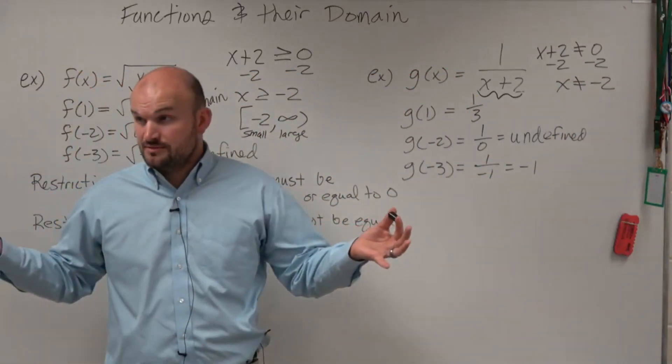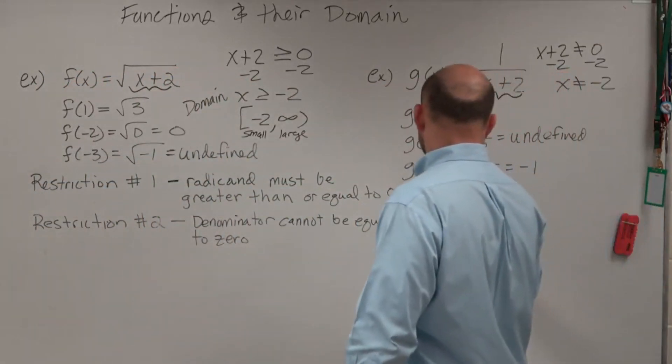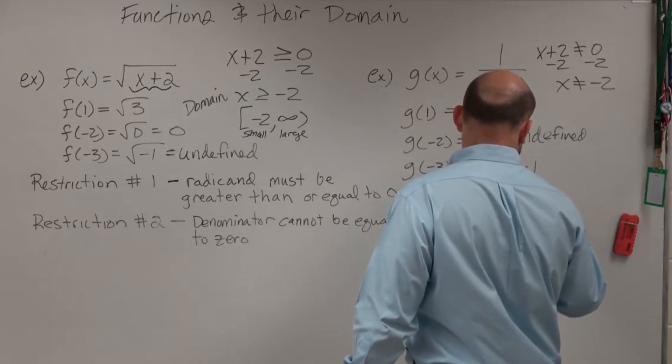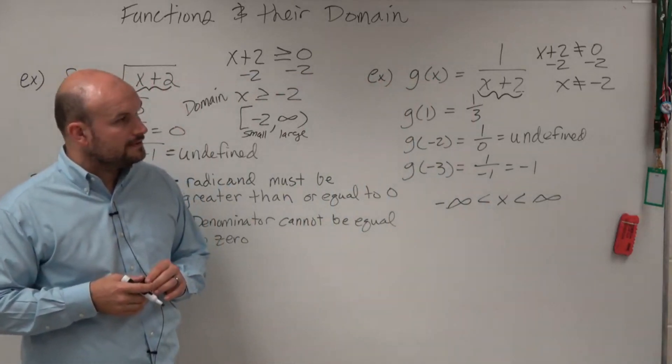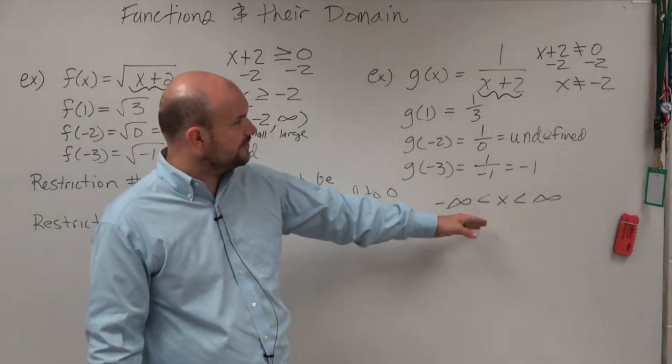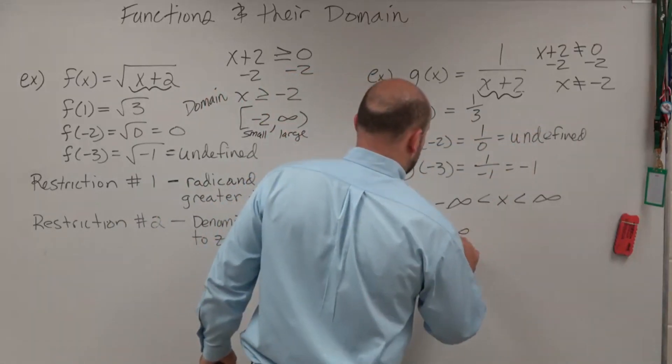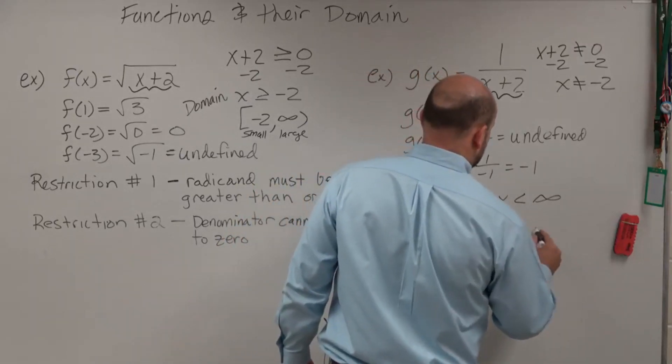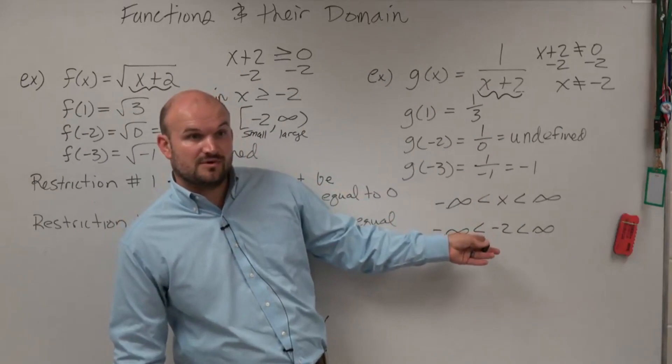But every other number works. Let's do interval notation first. So here's the list of all numbers to infinity. Let's go and think about where we're going to be. It's going to be all numbers except for negative two. So we can say negative infinity is less than negative two, which is less than infinity. Negative two is not included because those represent non-inclusion.